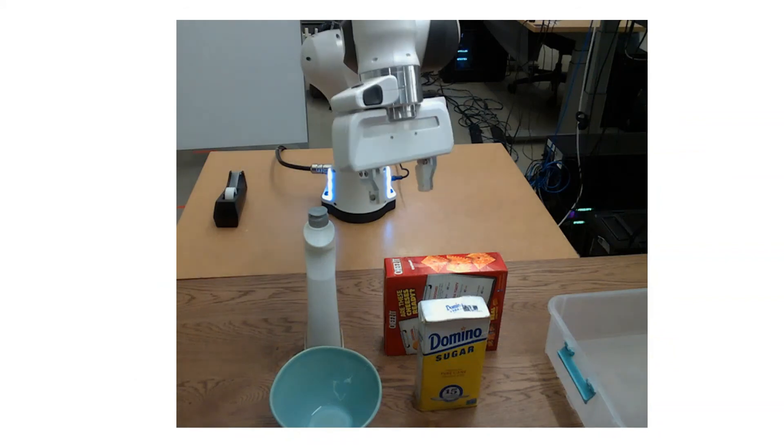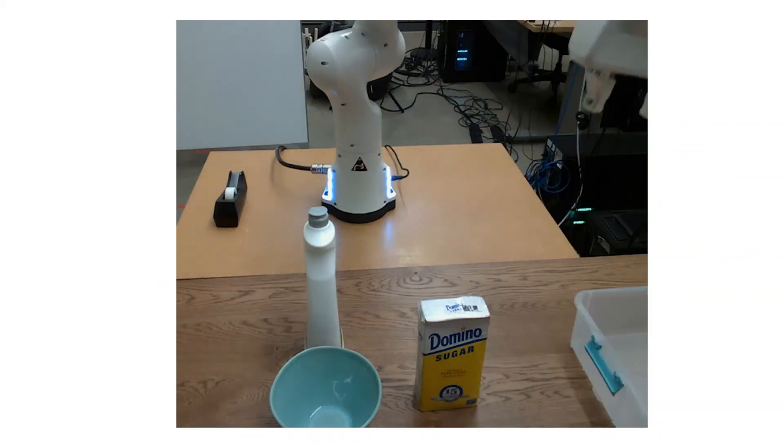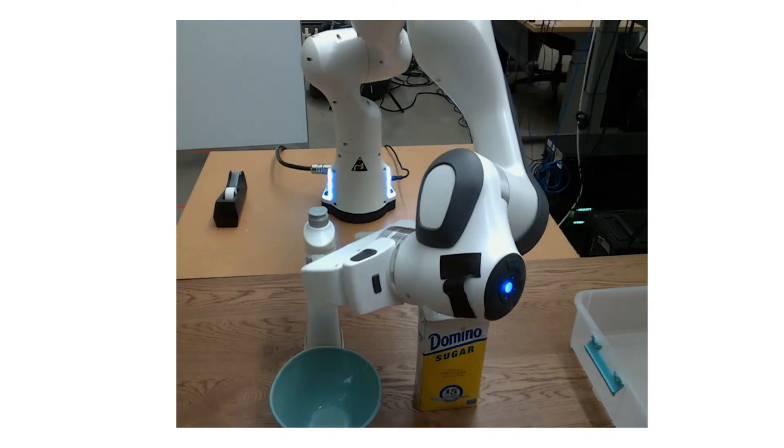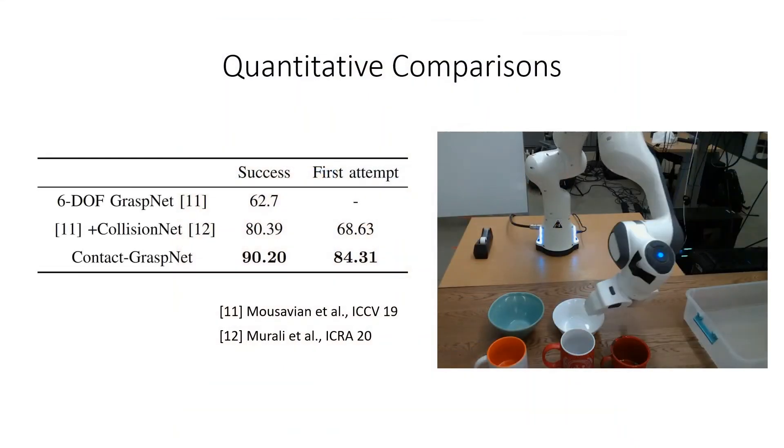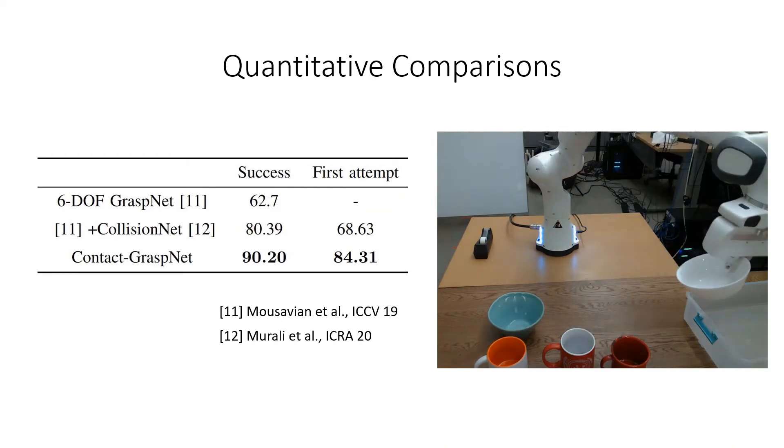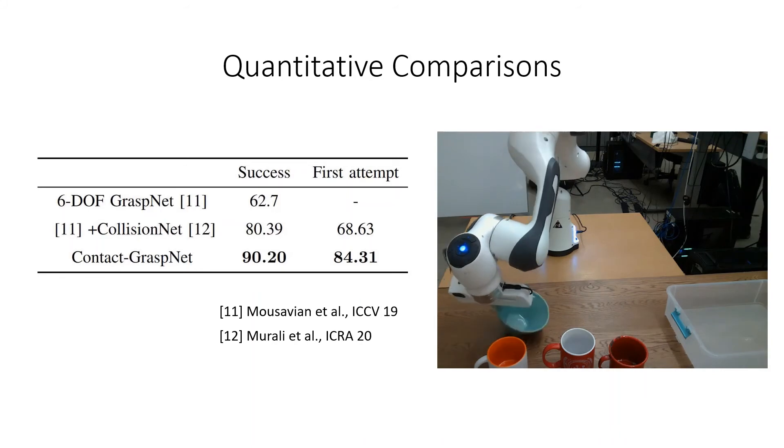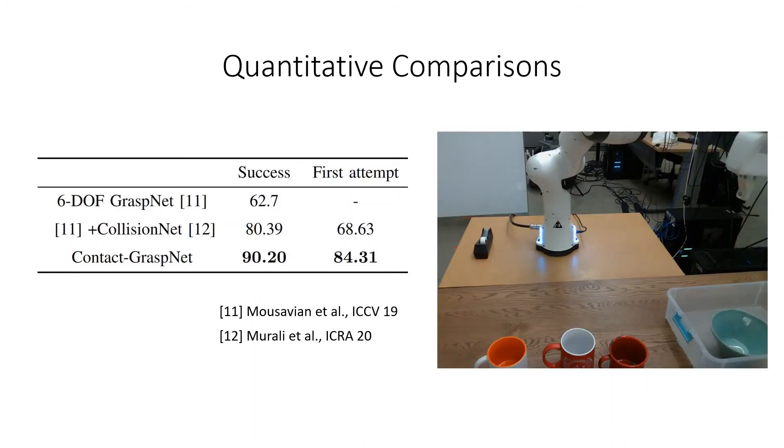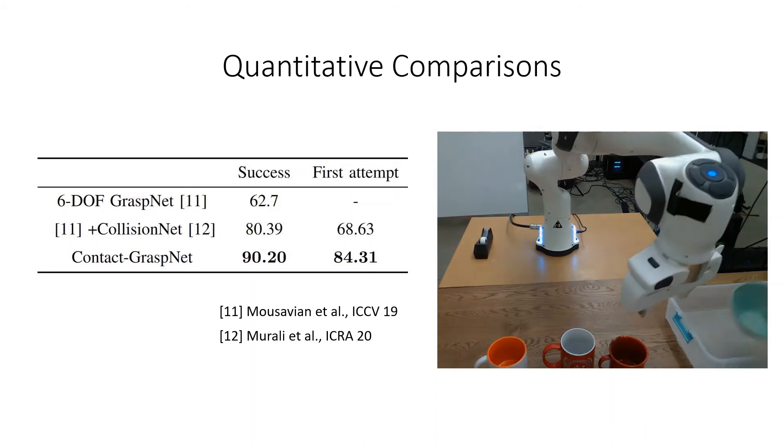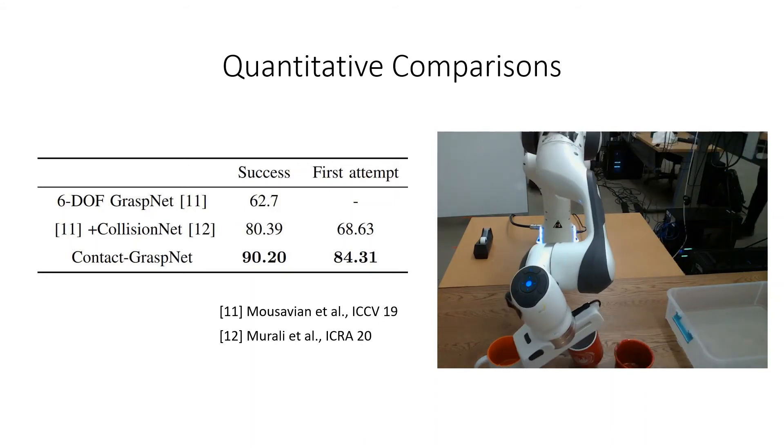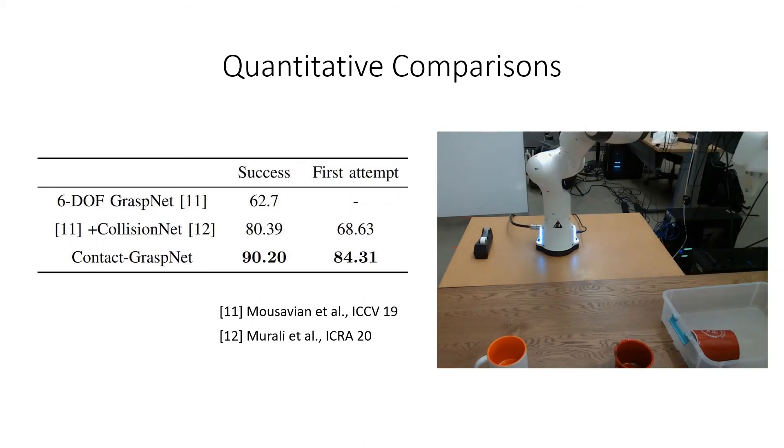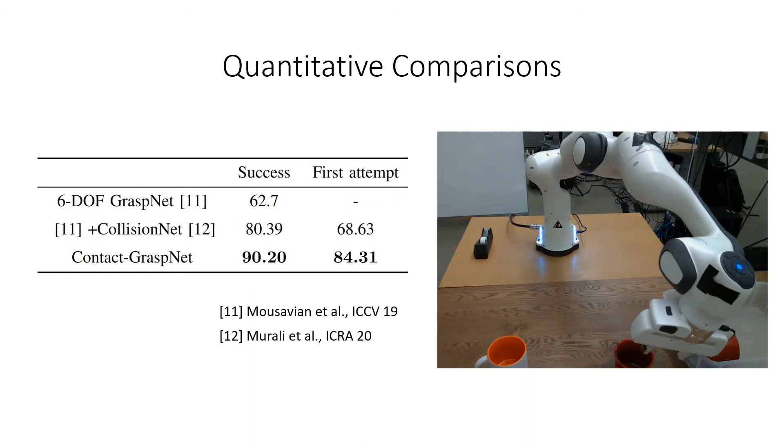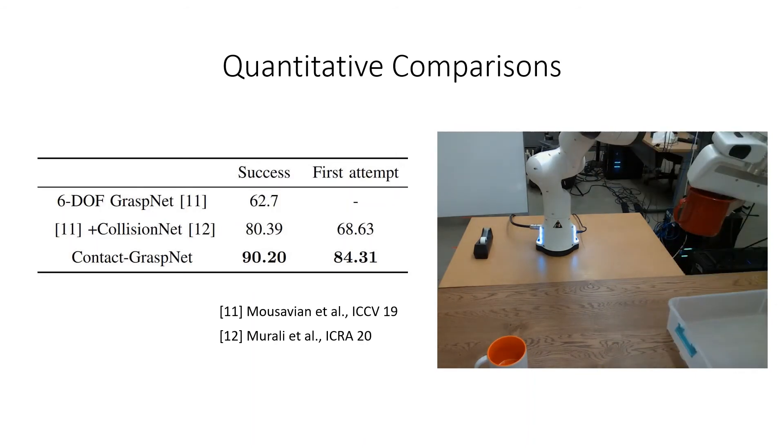For quantitative comparisons, we carefully replicate nine scenes with 51 unknown objects from previous works and compare the grasp performance. On these scenes, we achieve 90.2% grasp success after a maximum of two trials per object. This cuts the failure rate in half compared to recent state-of-the-art methods, which themselves have shown to outperform analytical baselines. 43 out of 51 objects can be successfully grasped in a single attempt, which is important for practical applications.